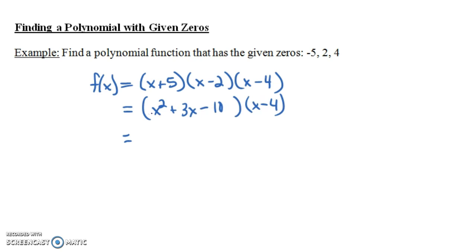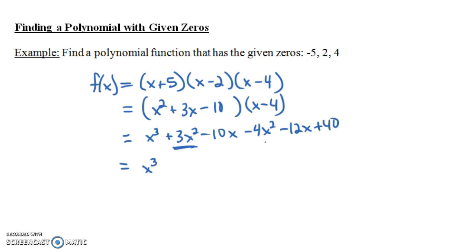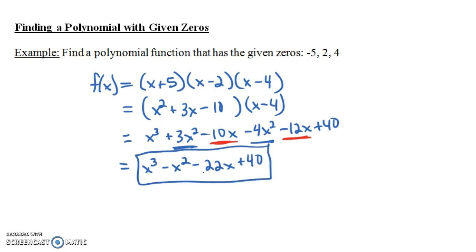To multiply (x² + 3x - 10)(x - 4), we multiply every term in the trinomial by every term in the binomial. Taking x times each term: x³ + 3x² - 10x. Then -4 times each term: -4x² - 12x + 40. Combining like terms: x³, then 3x² - 4x² = -x², then -10x - 12x = -22x, and +40. So our polynomial is x³ - x² - 22x + 40.